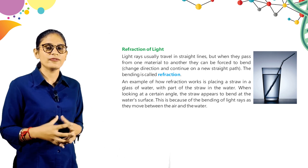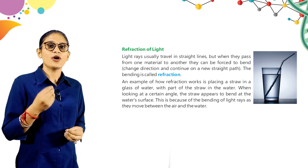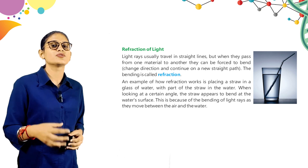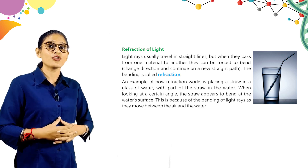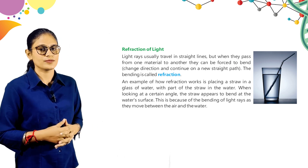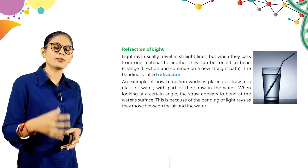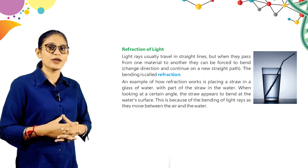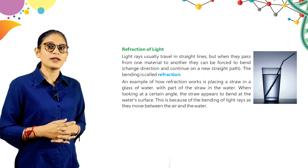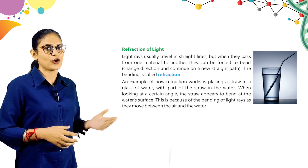An example of how refraction works is placing a straw in a glass of water. With part of the straw in the water, when looking at a certain angle, the straw appears to bend at the water surface. This is because of the bending of light rays as they move between air and water. Take a water glass, put a straw in it, and when you observe the straw, it will appear to be bending because the light has entered from air into water. Look at this picture — the straw is bending.